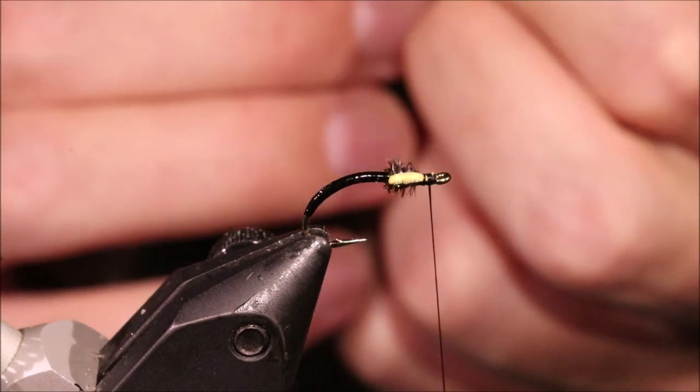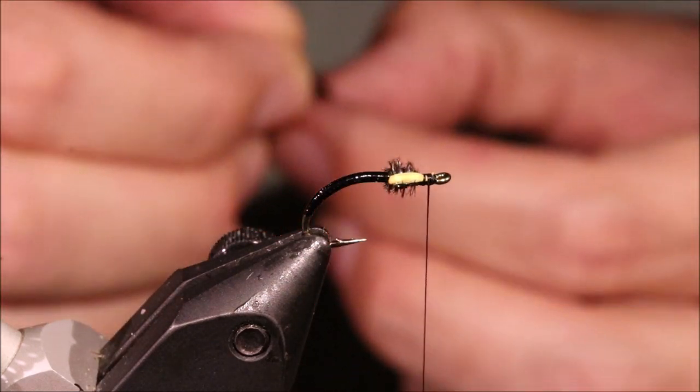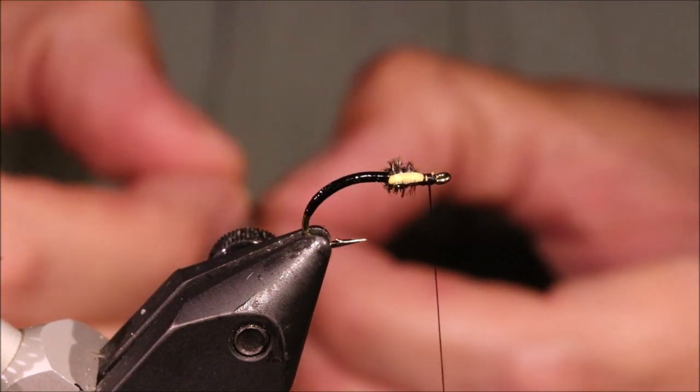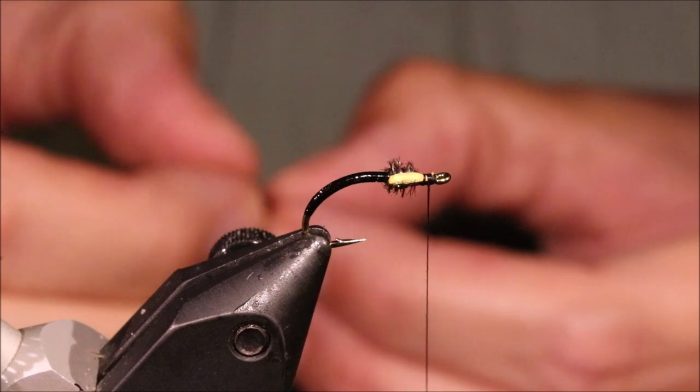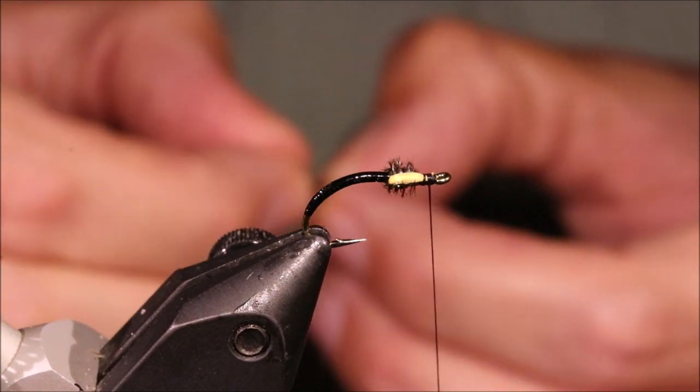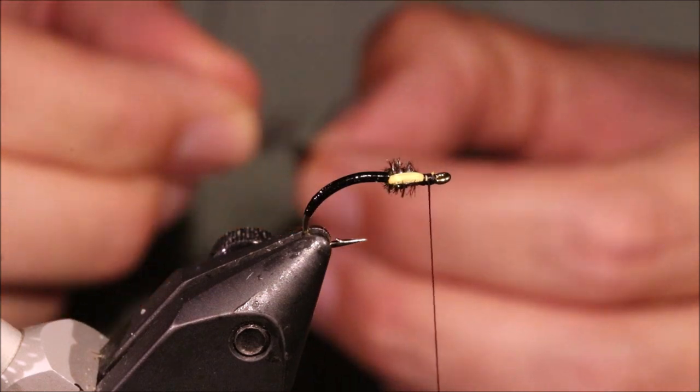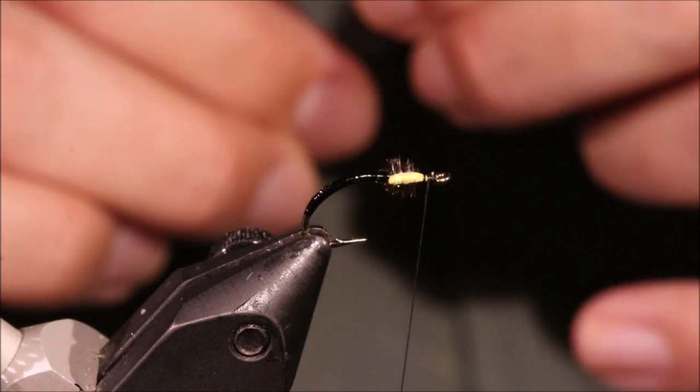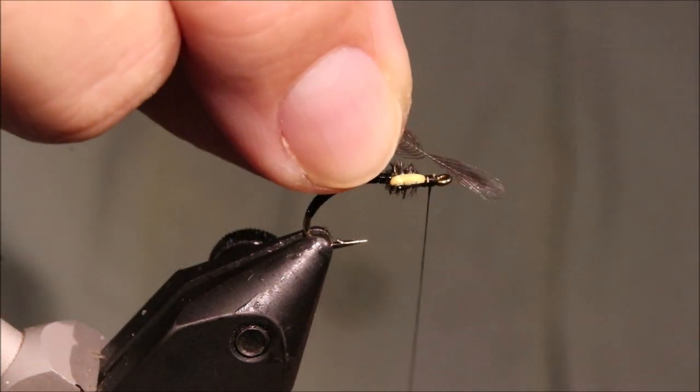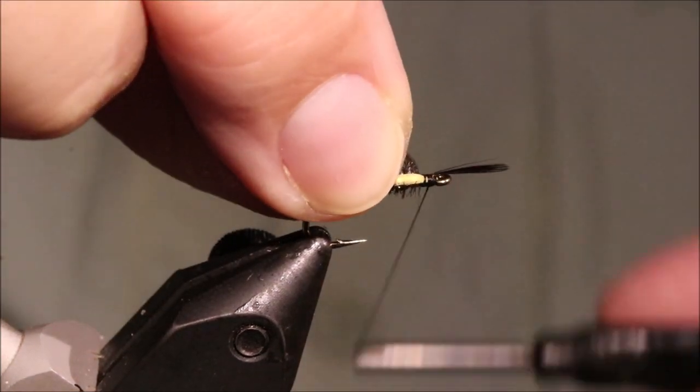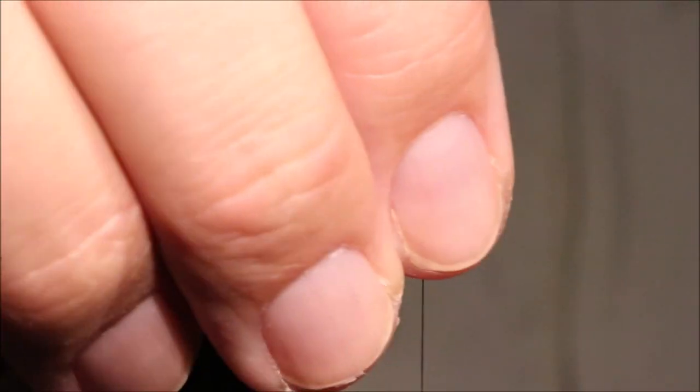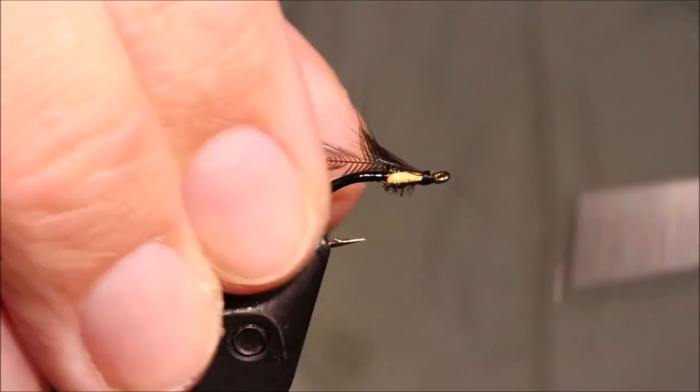And the last thing is a wee black hen hackle, and you want this to be nice and sparse. And this is a great fly for both browns and rainbows in the lakes and lochs. Tying this in by the tip, fold the tip back. I'll just reach in if I can, break that away.